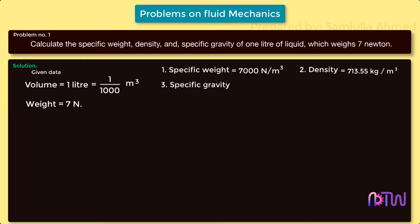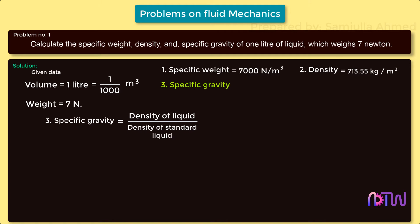Third, specific gravity of the liquid equals density of the liquid divided by density of the standard liquid. Density of this liquid is 713.55 kg/m³, divided by density of water which is 1000 kg/m³. Therefore, specific gravity of the given liquid is 0.71355.